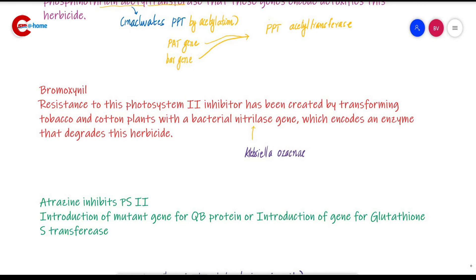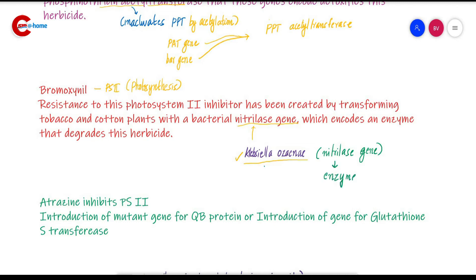Next we study bromoxynil. Bromoxynil inhibits photosystem 2, meaning it inhibits photosynthesis. To develop transgenic plants resistant to bromoxynil, we use the nitrilase gene obtained from Klebsiella ozaenae. This nitrilase gene can be transformed into tobacco and cotton plants and produces an enzyme that inactivates bromoxynil.